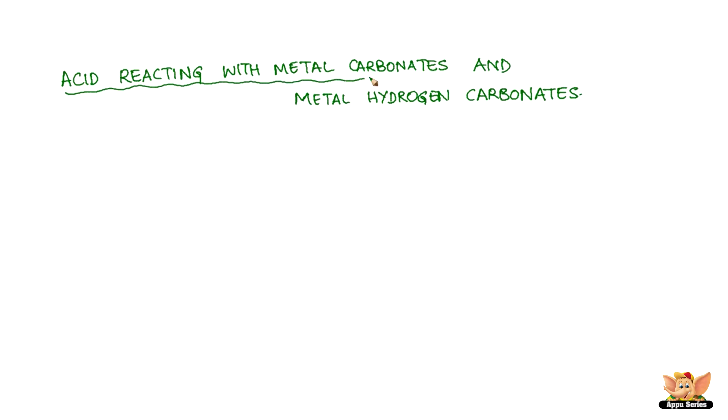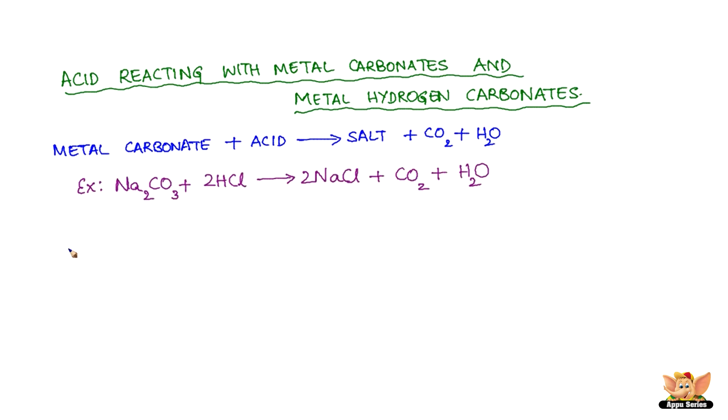Acids reacting with metal carbonates and metal hydrogen carbonates. Metal carbonates react with acid to form three products: a salt, carbon dioxide, and water. When sodium carbonate reacts with hydrochloric acid, we have sodium chloride salt, carbon dioxide, and water as the products.